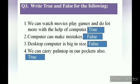Now come to the third question: write true and false for the following. The first one is: we can watch movies, play games, and do a lot more work with the help of a computer — the answer is true. Second: a computer can make mistakes — the answer is false.